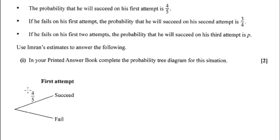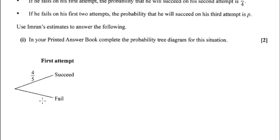In part one, it wants us to complete the tree diagram. So we can straight away say if he doesn't succeed, the chance of him failing must be 1/5.